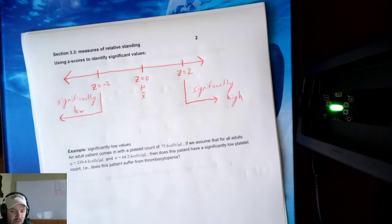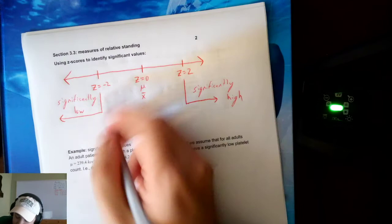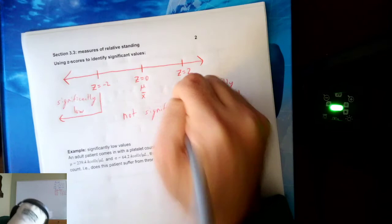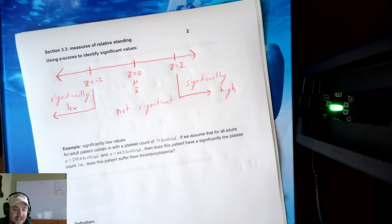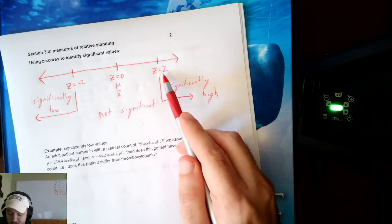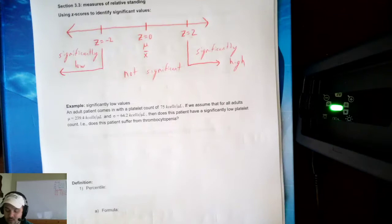Values in the middle — between negative 2 and 2 — are not significant. Be careful: if a z-score is exactly negative 2 it is significantly low; if it is exactly 2 it is significantly high; but in between is not significant.